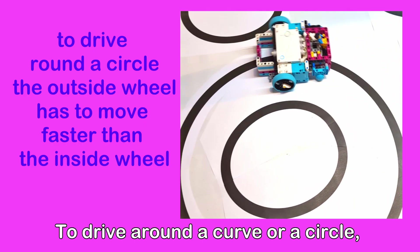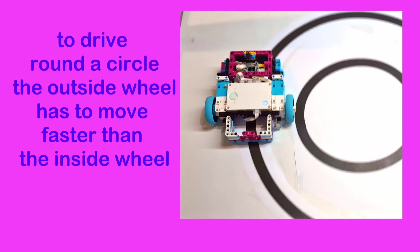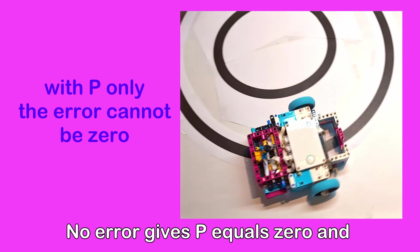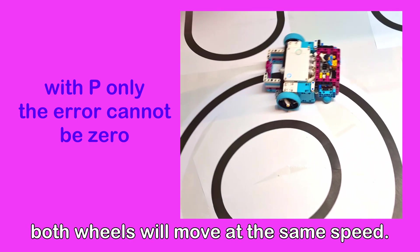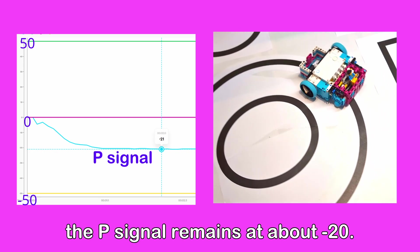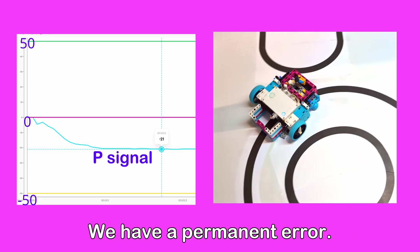To drive round a curve or a circle, the outside wheel will have to move faster than the inside wheel. With P control, there will have to be an error. No error gives P equals 0 and both wheels will move at the same speed. If we drive clockwise round a circle, the P signal remains at about minus 20. We have a permanent error.